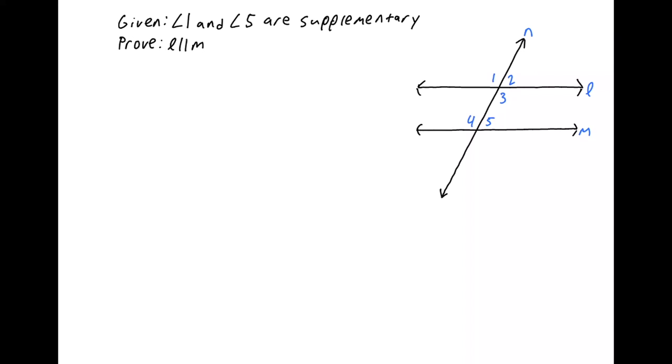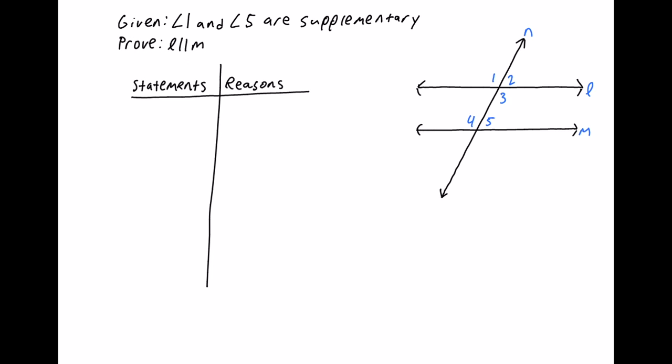Here's one problem. You're given that angle one and angle five are supplementary — which means they add up to 180 degrees. They want you to prove that line L is parallel to line M. Remember, two lines together like this mean parallel. So you have to make a two-column proof. You start by making your first statement, which was given to you: angle one and angle five are supplementary — and the reason is 'given.'